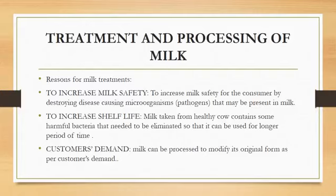Some heat treatments are involved to increase the shelf life of this kind of milk. The third reason is customer demand. As per customer demand, the original form of milk can be modified — it can be sold in a dried form, which we call powdered milk, or it can be available in the form of skim milk. So depending on what the customer's demand is, the processing and types of milk can be modified.